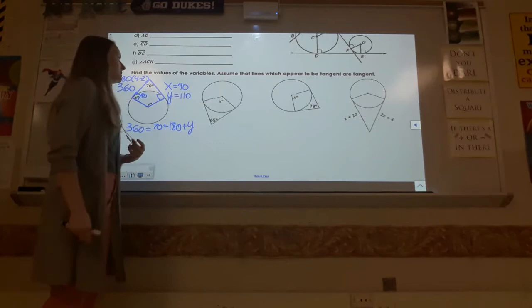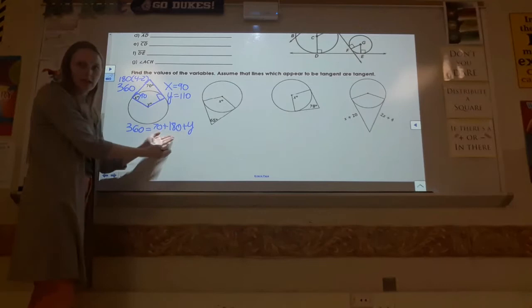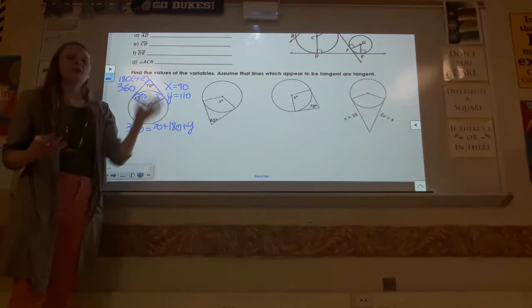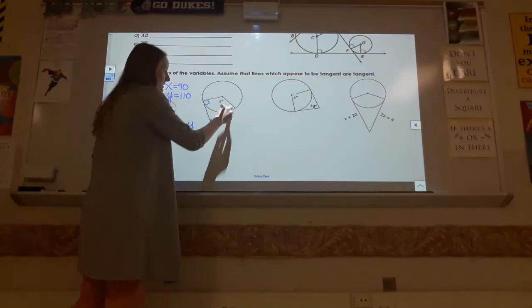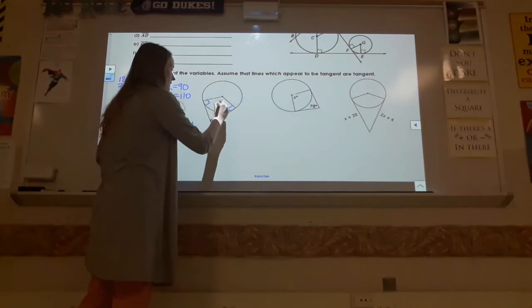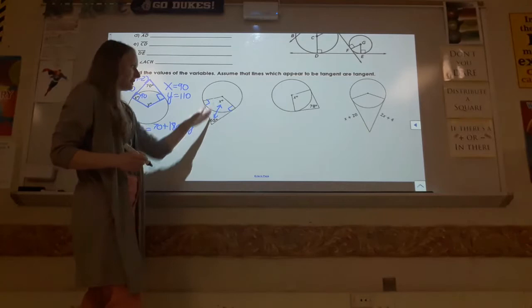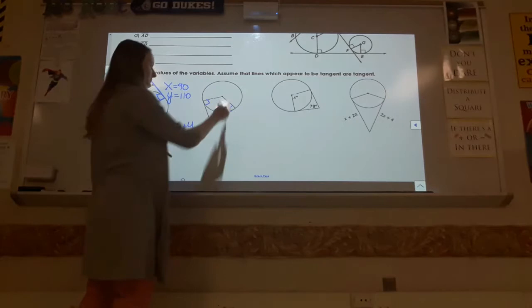So you can either do this full process every time — you can have the two 90s making 180, and then write out the whole equation. Or you can use this shortcut: when you guys have this scenario because both of these are 90 and all four add to 360, you can just remember that these two will add up to 180. So you can just do this as supplementary. Then using some algebra, the other example gives you 113.